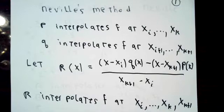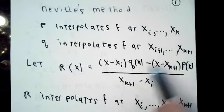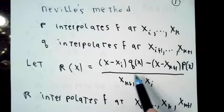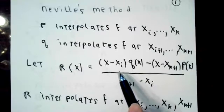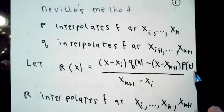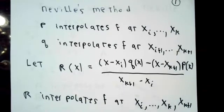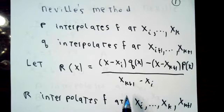So r will interpolate at one more data point than either p or q did separately. The way I remember how to write this down: q is the polynomial that has the bigger indexes on it. You multiply that by x minus the smallest index out of the collection you're looking at, minus you write the other polynomial — the one that interpolates at the smaller index values — times x minus xk+1. On the bottom of the fraction, you take the largest indexed x in the current collection and subtract away the smallest indexed x.